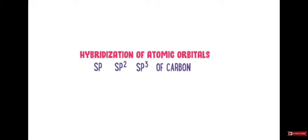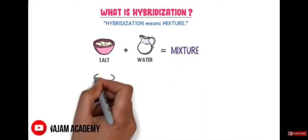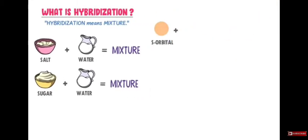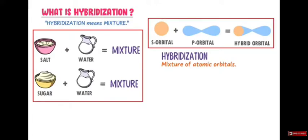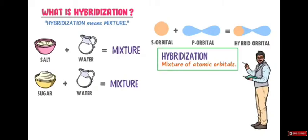Hybridization of atomic orbitals — sp, sp2, and sp3 hybridization of carbon. The word hybridization means mixture. For example, when you mix salt plus water you get a mixture, or sugar plus water you get a mixture. Similarly, consider two atomic orbitals — s orbital and p orbital. When these two orbitals are combined together, they form hybrid orbitals. Hybridization is the mixture or combination of atomic orbitals.